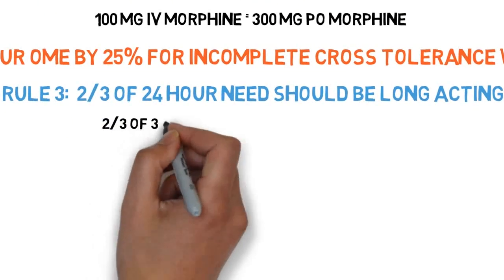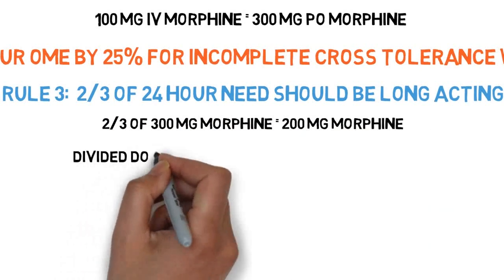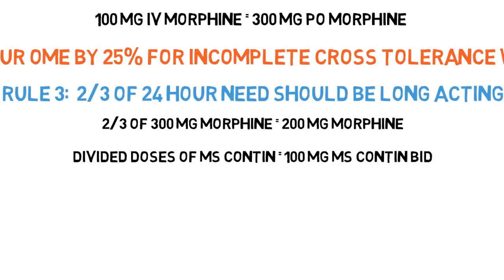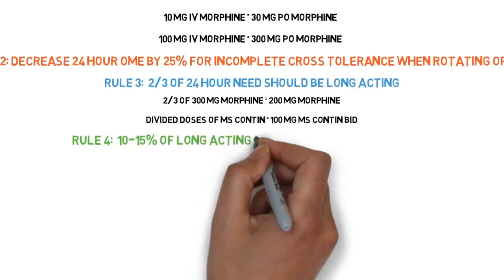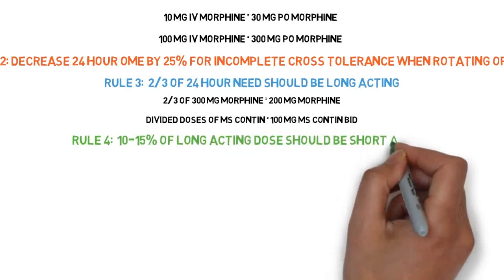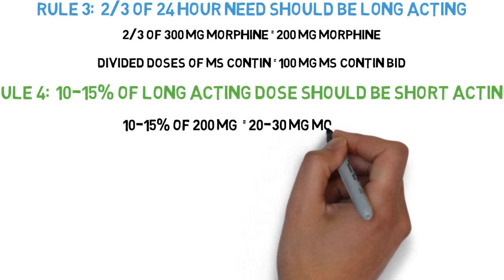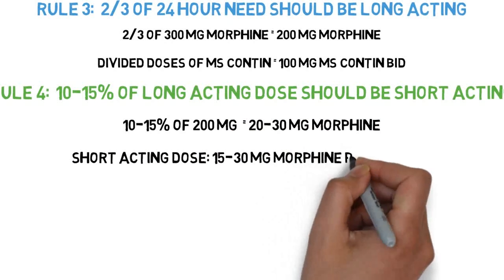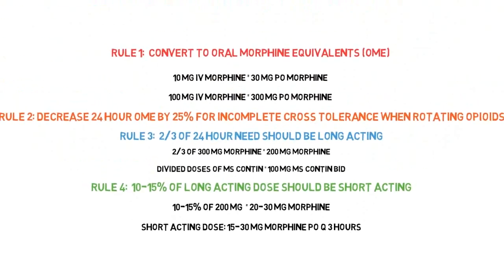Two-thirds of 300 OME equals 200 mg of oral morphine. With no contraindications, we use divided doses of long-acting morphine: 100 mg of MS-Contin administered twice daily. For rule four, the short-acting dose is 10–15% of the total 24-hour long-acting dose. Therefore, 10–15% of 200 mg is 20–30 mg of oral morphine. As immediate-release morphine is available in 15 and 30 mg tablets, our short-acting dose will be 15–30 mg of oral morphine every three hours as needed for breakthrough pain.